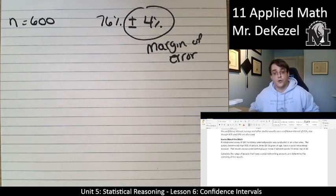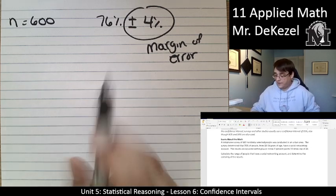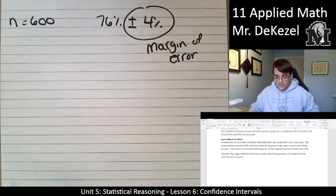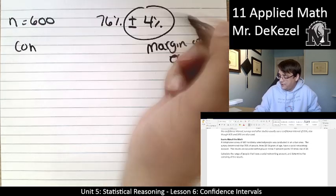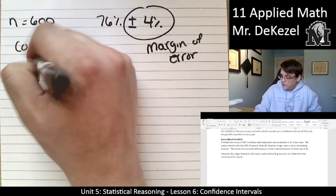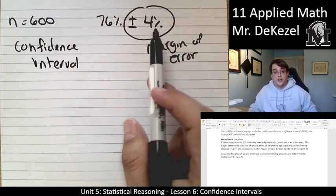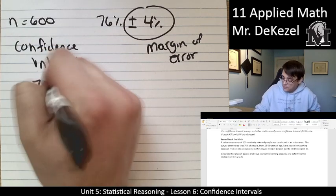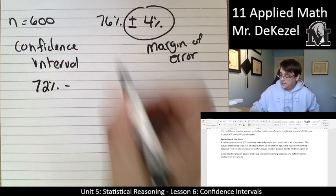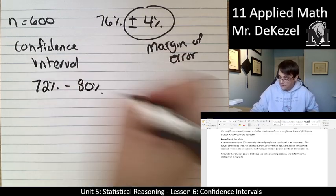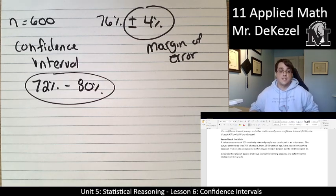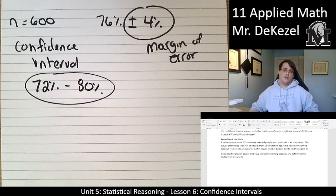Our margin of error is 4%. We just got that straight from the question. We have 76% average, and we have a margin of error of 4%, which means that we can determine our confidence interval. Our confidence interval is using our margin of error and our mean to determine the range at which we would expect to be correct. So 72%, so 76 minus 4, and then 76 plus 4 is 80%. So this is our confidence interval. 72% to 80%. So the mean was 76, or what we expected was 76, and we have a margin of error of 4, so our confidence interval is 72 to 80.